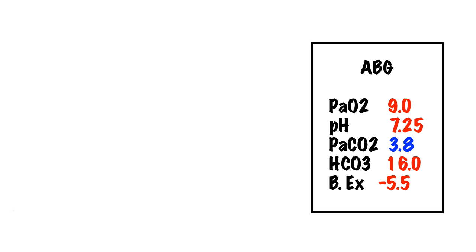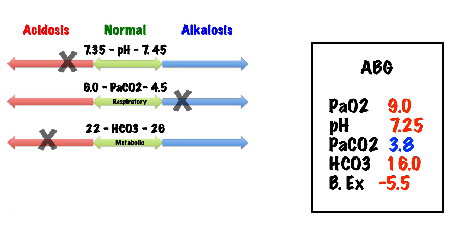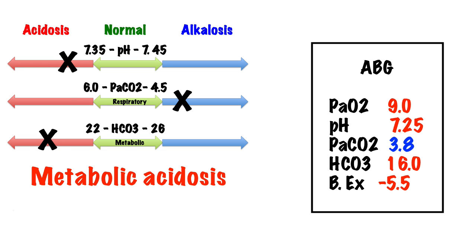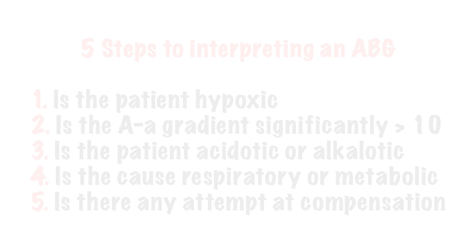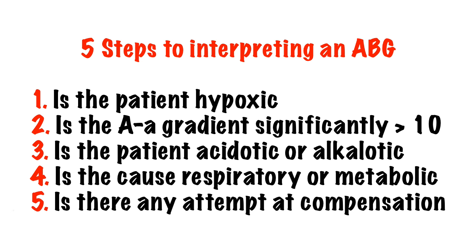If you ever struggle to work out what's going on with an ABG, try drawing this diagram and plotting the figures. Whatever is on the same side of the pH is the cause of the acidosis or alkalosis, and if there's anything in the opposite direction, then that's compensation. Try to see as many blood gases as you can, and get used to looking at them, interpreting them, and working out why this is happening. Good luck.